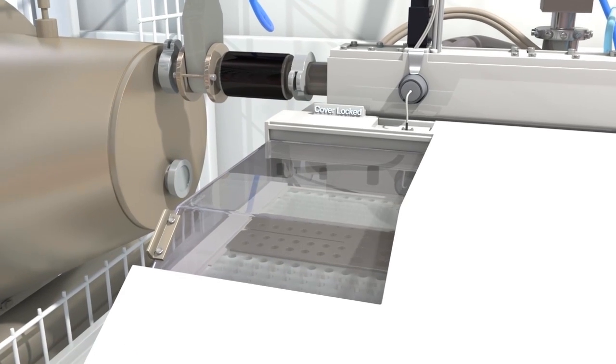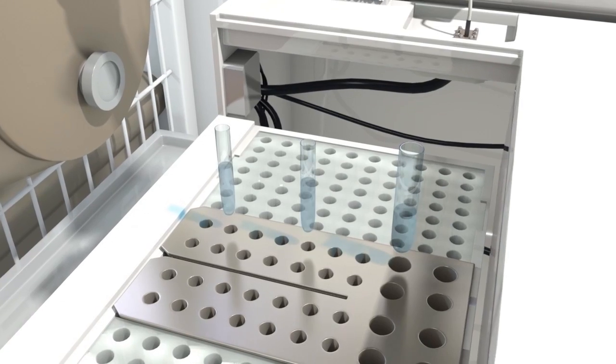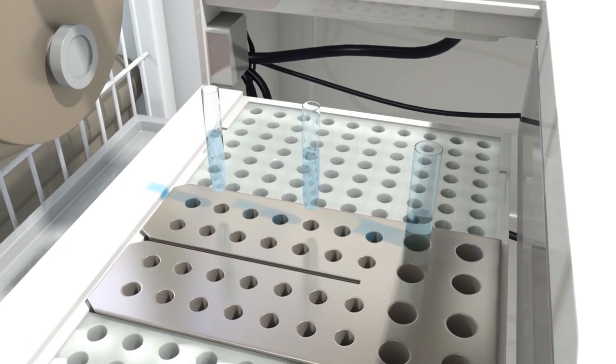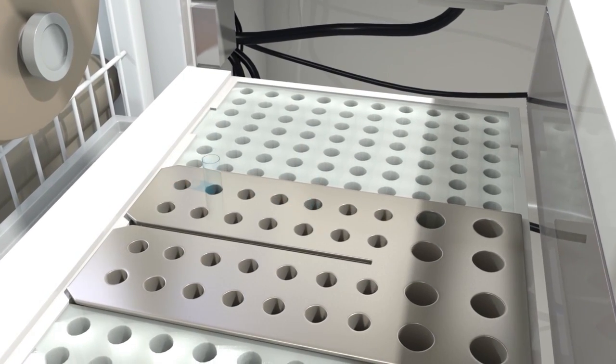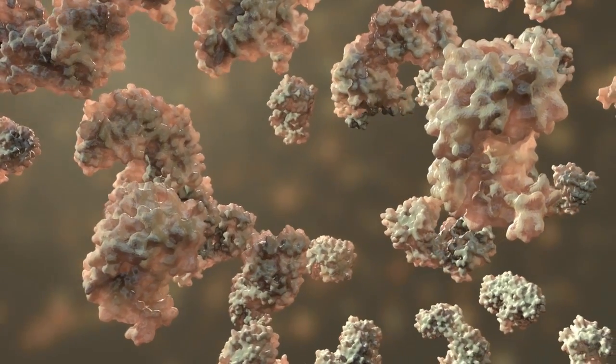A SAXS experiment starts with loading a liquid sample into the sample loader, which may contain any type of macromolecule that we want to study. In this example, the sample contains proteins, of which shapes will be probed by a highly focused beam of X-ray radiation.